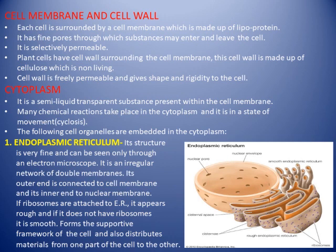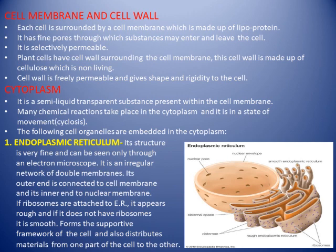Plant cells also have a cell wall outside the cell membrane. The cell membrane is the inner layer and the cell wall is the outer layer. This cell wall is made up of cellulose and is non-living. Unlike the cell membrane, the cell wall is freely permeable — it allows most things to move in and out with no restrictions. Its main function is to give shape and rigidity to the plant cell and maintain its tensile strength.